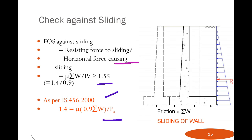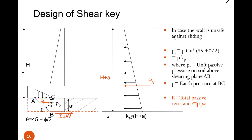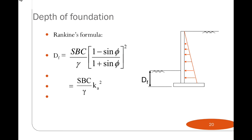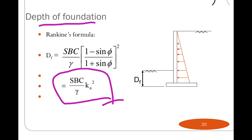If the shear key is provided, the sliding will be arrested. The shear key is provided whenever the check for sliding is not satisfied, and the shear key design is based on the sliding moment. For the minimum depth of foundation, as per Rankine's formula: df = (SBC / γ) × [(1 − sin φ) / (1 + sin φ)]², where the term [(1 − sin φ) / (1 + sin φ)] is Ka. Substituting: df = SBC / (γ × Ka²). This formula is used to find the minimum depth of foundation.